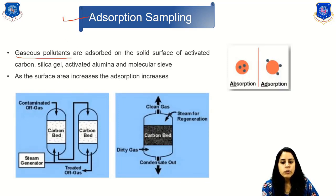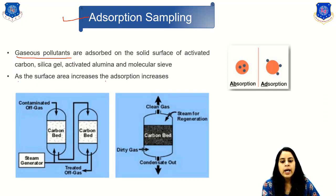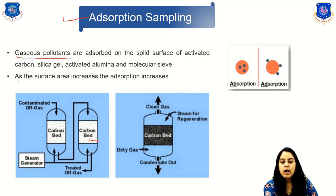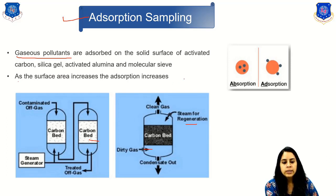The next method is adsorption sampling. Gaseous pollutants are adsorbed on the solid surface of activated carbon, silica gel, activated alumina, or molecular sieves. Increasing the surface area increases adsorption. In the setup, contaminated gas enters a carbon bed, and steam is used for regeneration, allowing clean treated gas to exit. Adsorption involves the solid surface retaining the gas, whereas absorption involves the gas being taken up into a liquid.